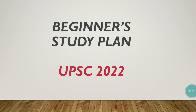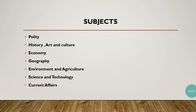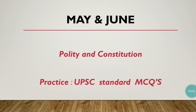Hello friends, good evening. Welcome to Beginners IAS. Let us see about the beginner study plan for UPSC 2022. These are the list of subjects to cover for your UPSC prelims exam as well as mains exams. UPSC has two papers: General Studies 1 and the CSAT paper. The CSAT paper is compulsory. Under General Studies 1, the subjects are Polity, History, Art and Culture, Economy, Geography, Environment and Agriculture, Science and Technology, and Current Affairs.